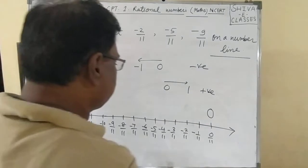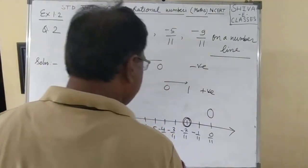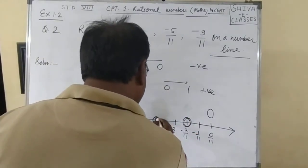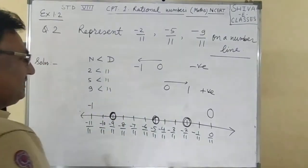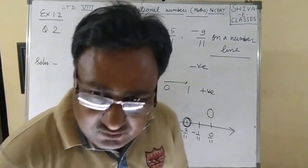The numbers we need to represent are: -2/11, -5/11, and -9/11. These are our numbers, thank you.